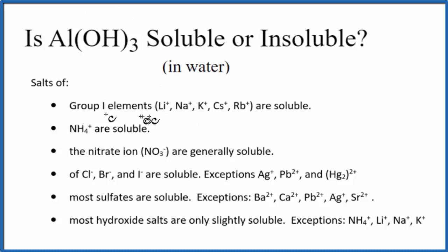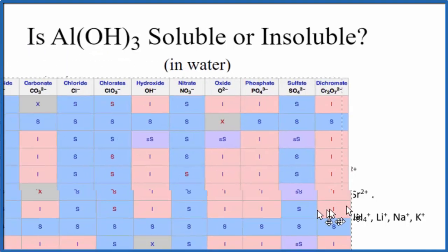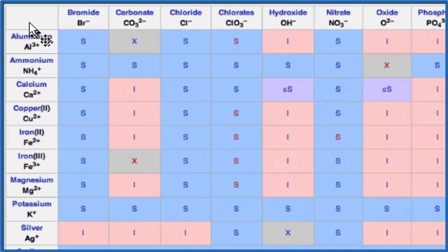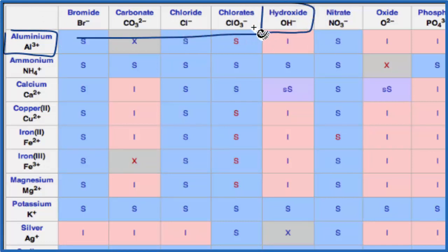We could also take and look at a solubility chart. So here's a solubility chart, and we find aluminum right there at the top, Al³⁺. Then we have the negative ions, here's the hydroxide, OH⁻, so we go over and then down, and that I, that says that it's insoluble.